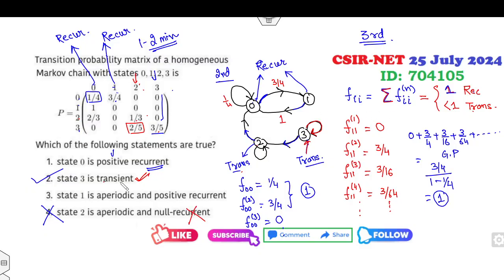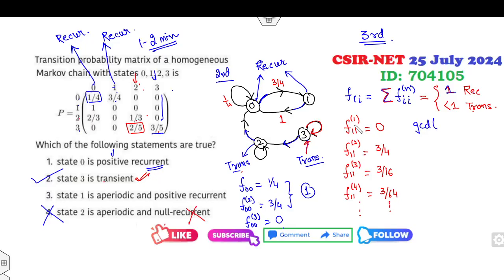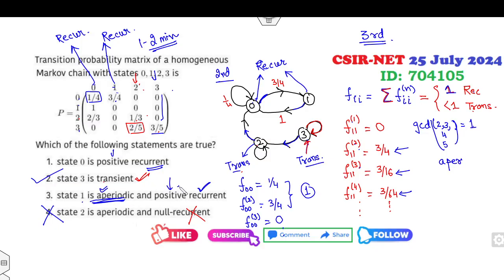Now check aperiodicity. A state is aperiodic if the GCD of its return time periods is 1. For state 1, returns happen at steps 2, 3, 4, 5, and so on due to the self-loop. The GCD of {2, 3, 4, 5, …} is 1, so yes — state 1 is aperiodic. This confirms that option is correct.